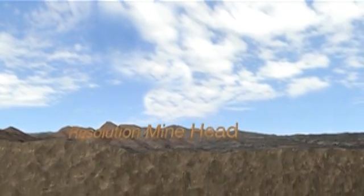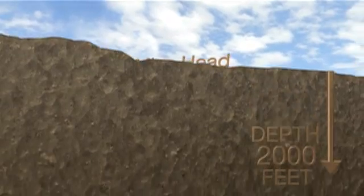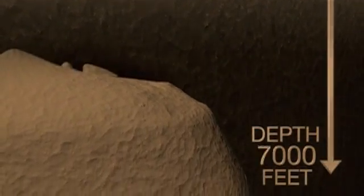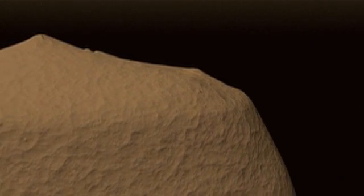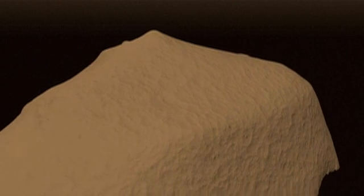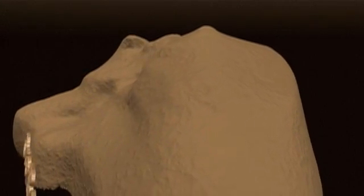The ore body sits 7,000 feet beneath the desert floor and approximately one mile behind an escarpment or cliff known as Apache Leap. Here at the Resolution Mine, panel caving is the safest and most productive way to mine this deep, large, low-grade deposit.